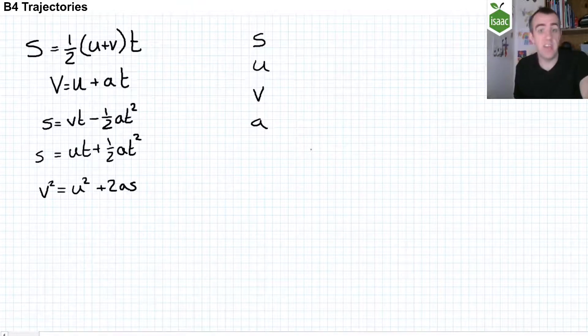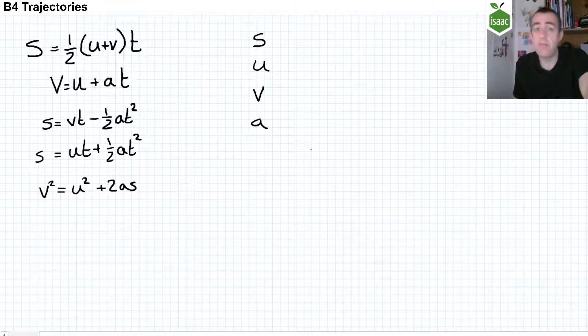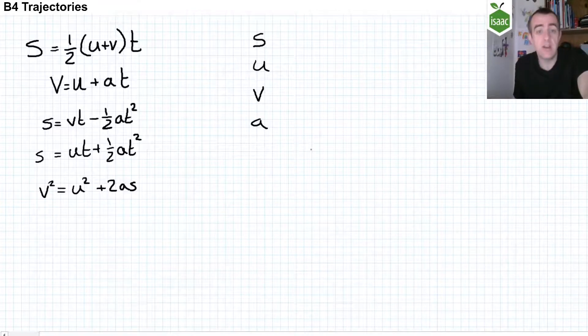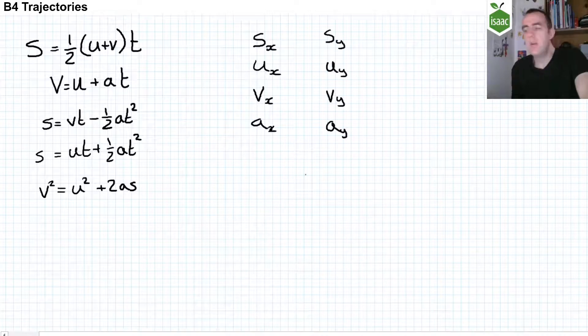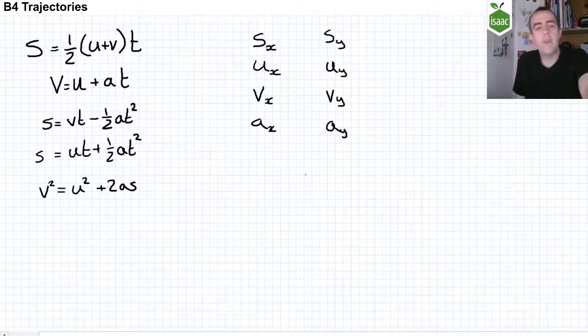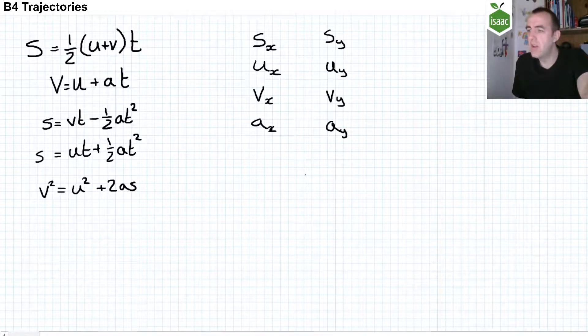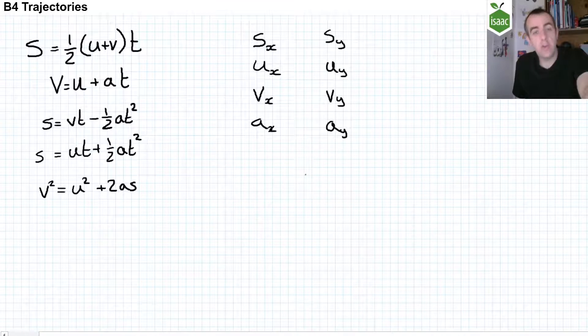Similarly, a velocity in the x-direction is unaffected by any displacement, velocity, or acceleration in the y-direction as long as x and y are perpendicular. So in fact we end up with five SUVAT equations for each of the two directions.